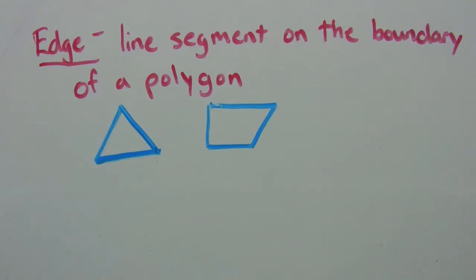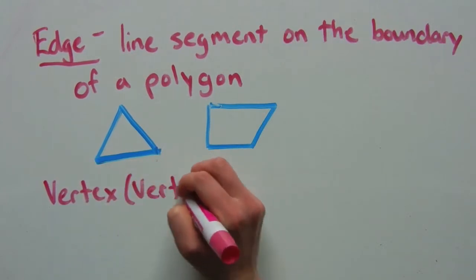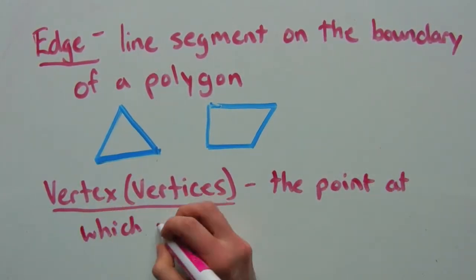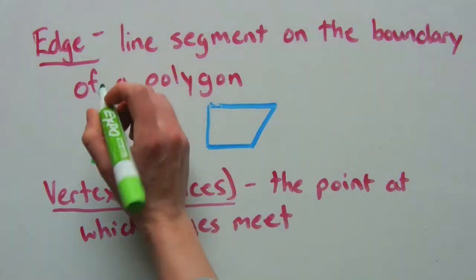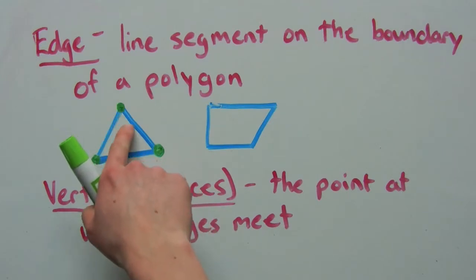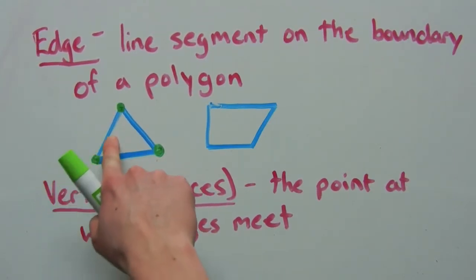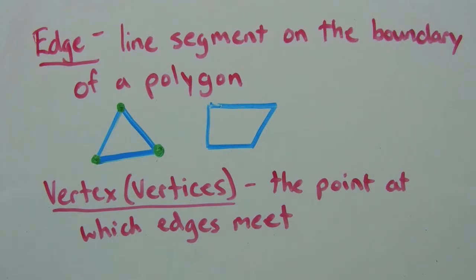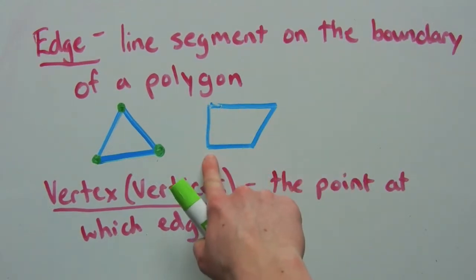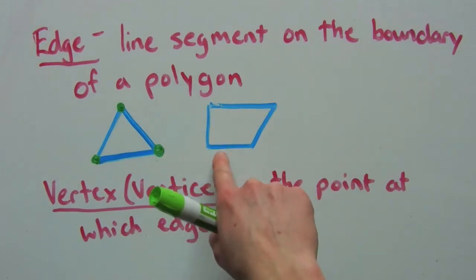Next we're going to go over vertex or vertices. A vertex is the point at which edges meet. And when you have a multiple number of vertex, it's referred to as vertices. For a triangle, we have three vertices: a vertex where one edge meets the second edge, a vertex where the second edge meets the third edge, and a vertex where the third edge meets the first edge. On a quadrilateral, you can see that we will have four vertices because the edges touch or meet in four different places.